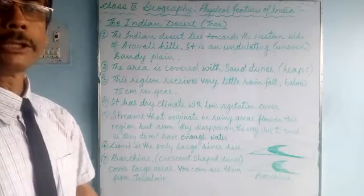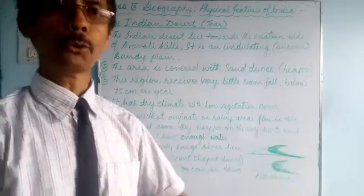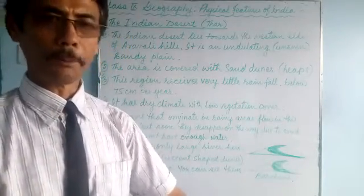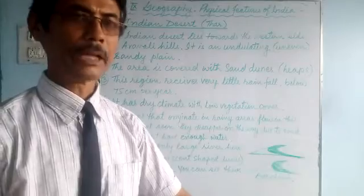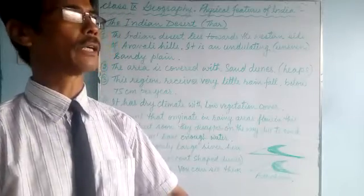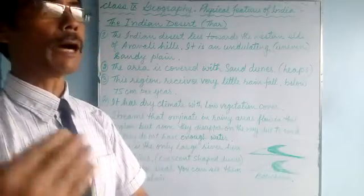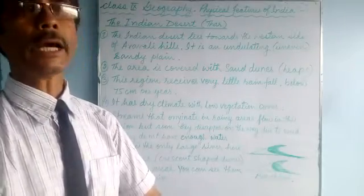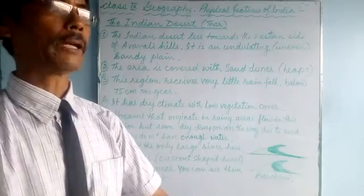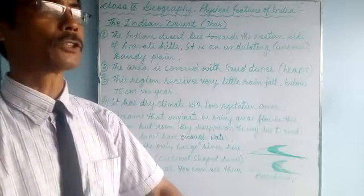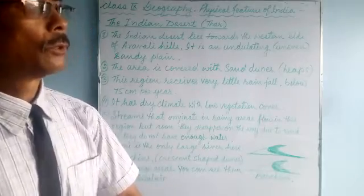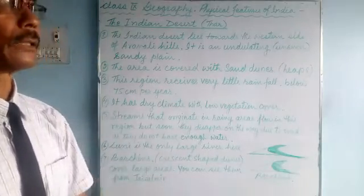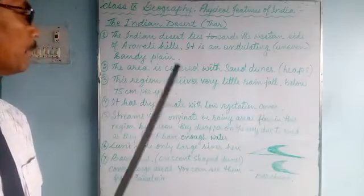That's all for the Thar Desert — the Indian Desert. In our next class we'll talk about the coastal plains, which is also one of the physical features of our country. After that we'll talk about the island groups. Two more physical features are left to cover.